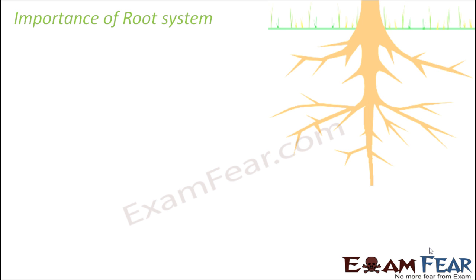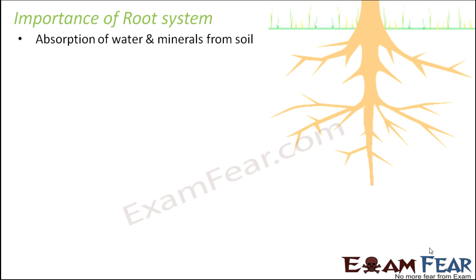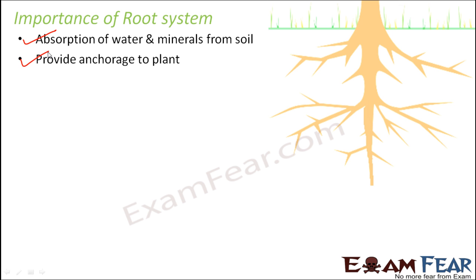Overall, the primary function of roots is to absorb water and minerals from the soil, as plants cannot survive without them. We water the plant, the water goes into the soil, and the root takes that water and supplies it to different parts of the plant. Besides this, roots also provide anchorage to the plant — because of roots the plant remains fixed on the ground, providing stability.